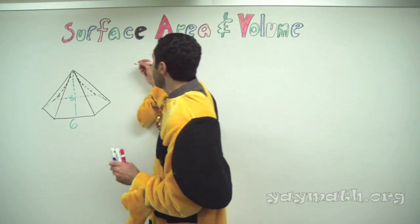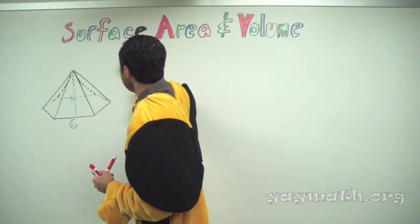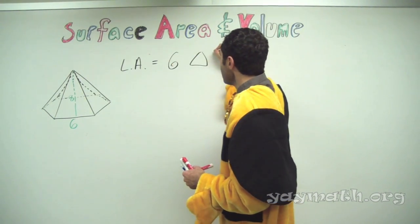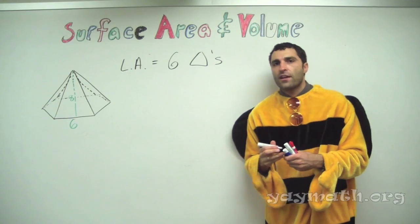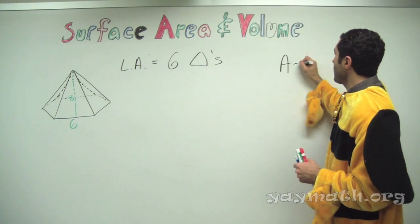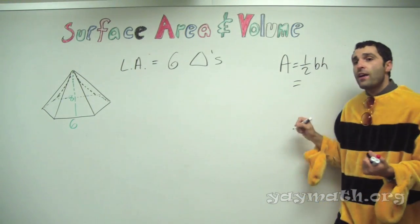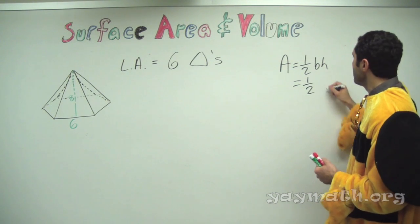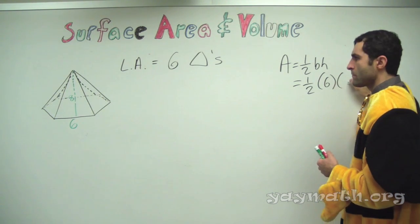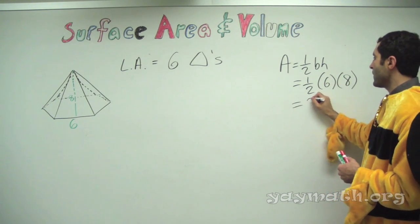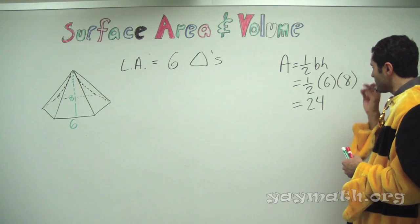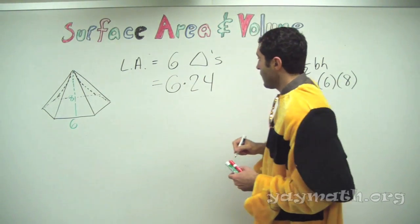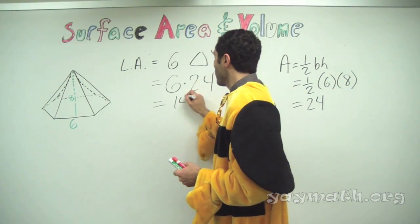So let's go ahead and do lateral area first. Why don't you take a minute and calculate the six triangles? I like to do one triangle and then multiply it by six. One triangle: one half times six times eight equals twenty-four. Times six triangles equals 144. So the lateral area is 144.